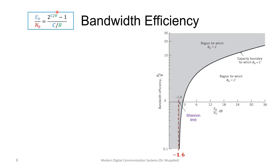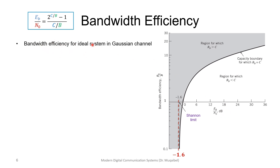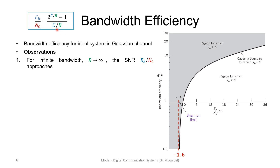Now let's take this equation, plot the bandwidth efficiency, and draw some important conclusions. The diagram shows bandwidth efficiency Rb/B on the y-axis versus Eb/N₀ in dB on the x-axis. Starting with this equation for ideal systems in a Gaussian channel: for infinite bandwidth, taking B to infinity, we find that Eb/N₀ approaches ln 2, which equals 0.693.